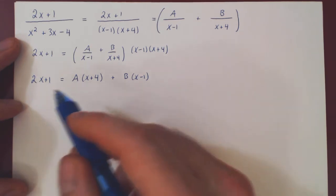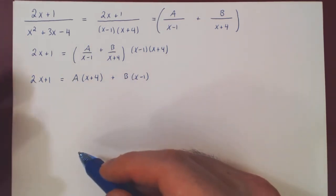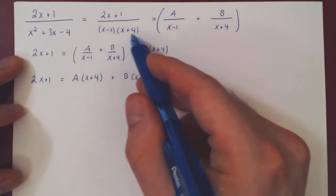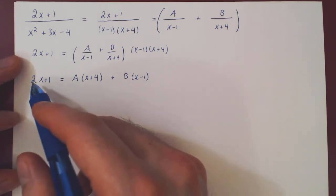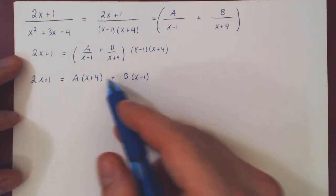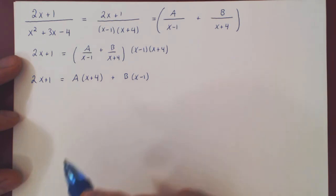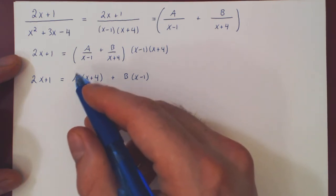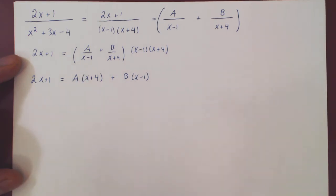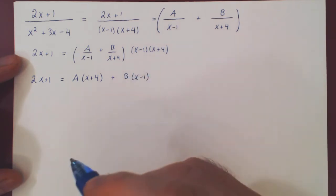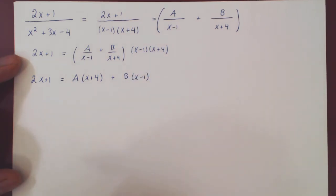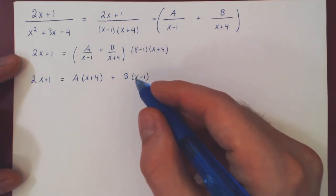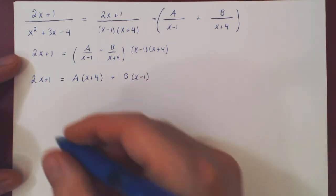At this stage there are two methods for solving the coefficients A and B. The first is the simplest when you have linear factors that do not repeat. Since the equality is between two polynomials, it must be true for every value of x we choose. If we can eliminate one coefficient by choosing a value of x, we can solve for the other independently. We can eliminate B by choosing x equal to 1, since 1 minus 1 is 0, so that term vanishes.